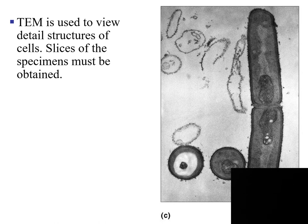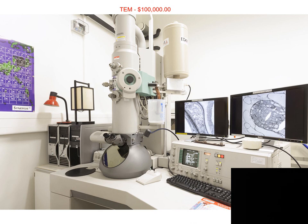The transmission electron microscope is used to view detailed structures of cells. This microscope has to take microscopically thin slices of the specimen in order to work. In this image, we're looking at a rod-shaped bacteria that was thinly sliced, and to the left of that rod you see a thinly sliced coccus — circular bacteria. The transmission electron microscope is very expensive; it costs roughly $100,000.